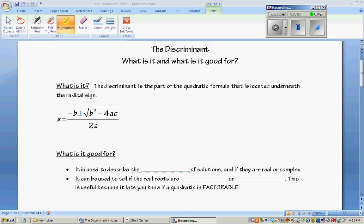The discriminant: what is it and what is it even good for? What it is, is the part of the quadratic formula that's located underneath the radical sign, so it's b squared minus 4ac.